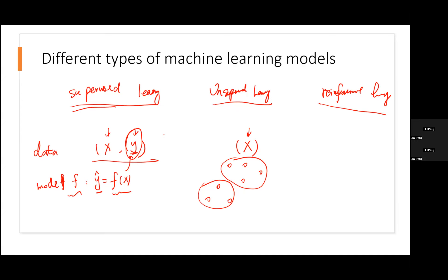Reinforcement learning is sort of in the middle between the two, but the data comes in a different form — as X and R. R represents our reward. Once we have the inputs X, R is our reward from the environment. For example, say we want to train a self-driving car. X is our vision from the camera — the pictures we see in front of the car. R is our reward: did we bump into the road curves, or did we drive smoothly without bumping into things?